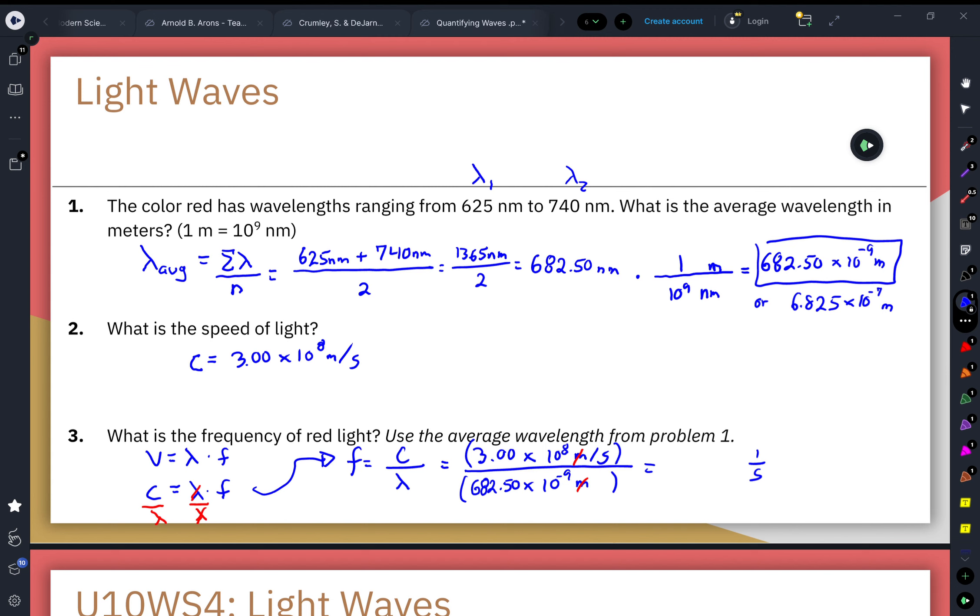So when we plug this into our calculator, the 3 times 10 to the 8th power as the numerator divided by the 682.5 times 10 to the negative ninth as the denominator, we would get a long string of numbers which I'm just going to round to 4.40 times 10 to the positive 14th.